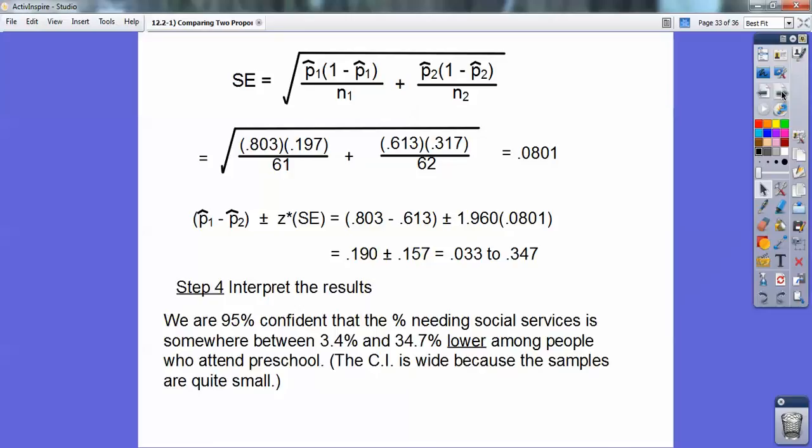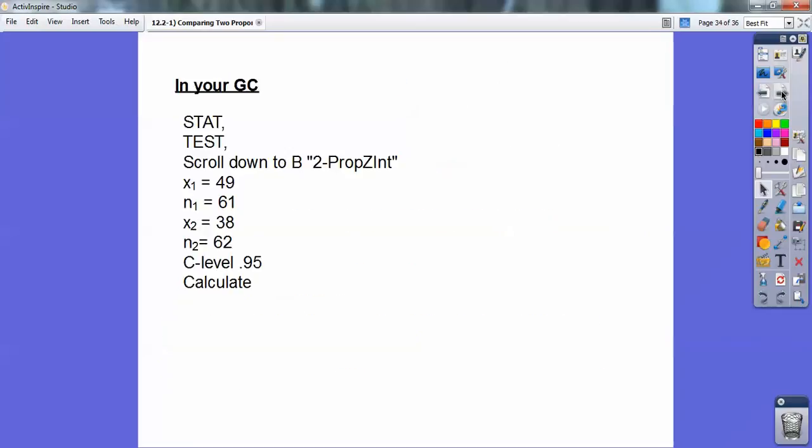Let's go ahead and interpret those results. We're 95% confident that the percent needing social services is somewhere between 3.4% and 34.7% lower among people who attended preschool. Because it's the difference, you guys. So it's lower for the ones who attended preschool. This confidence interval is wide because the sample sizes are quite small.